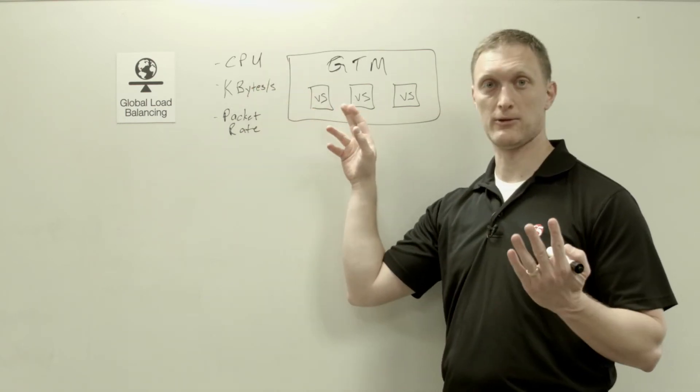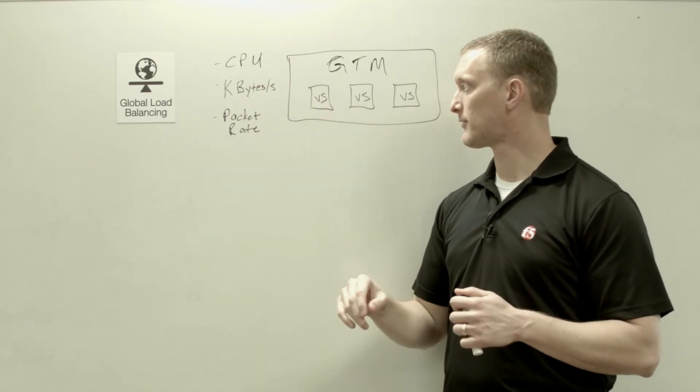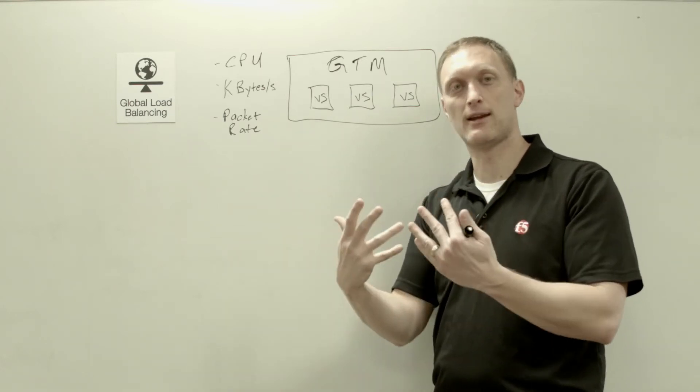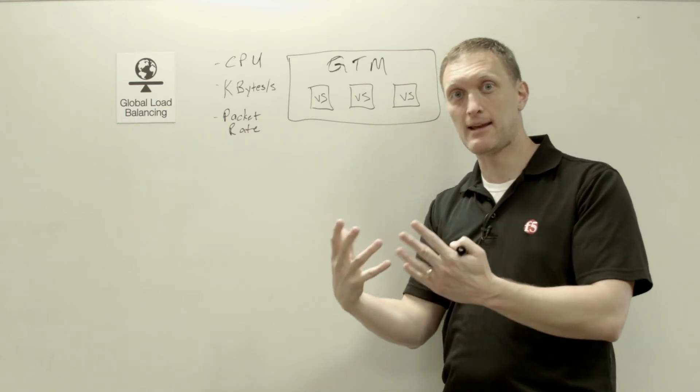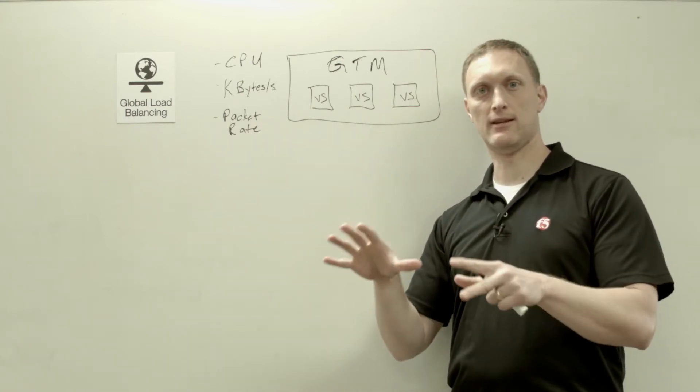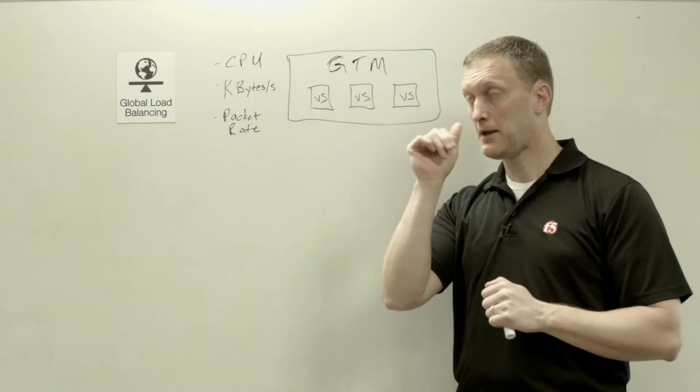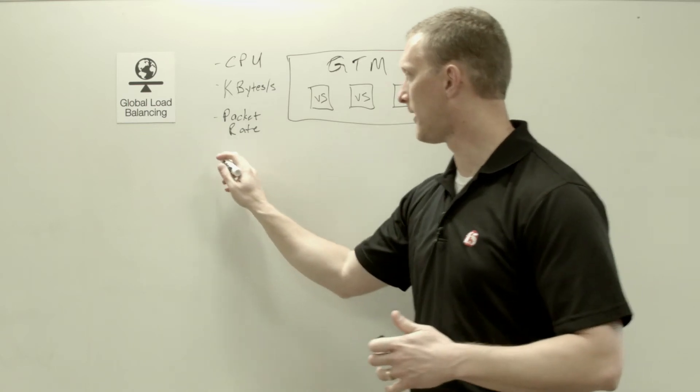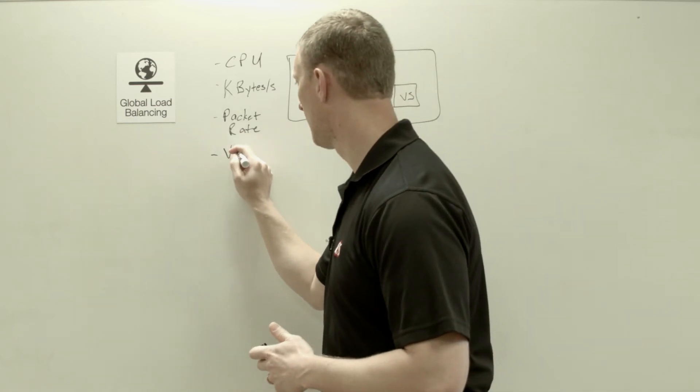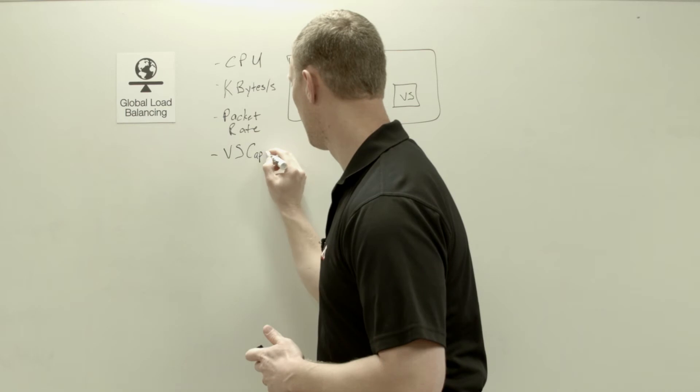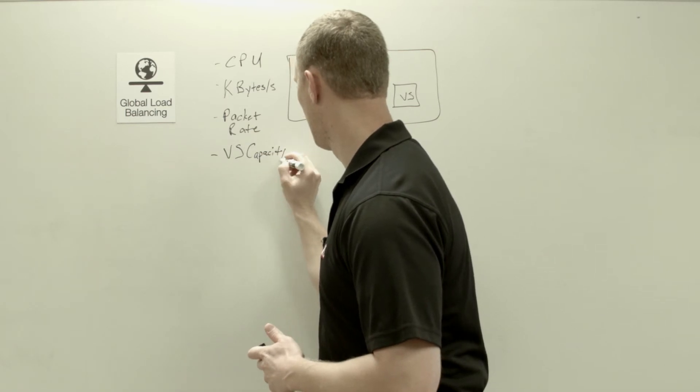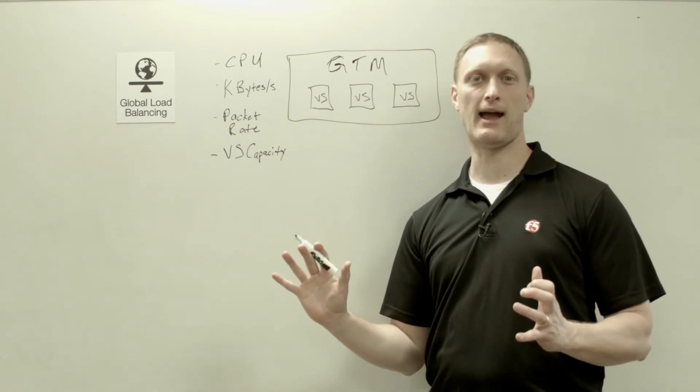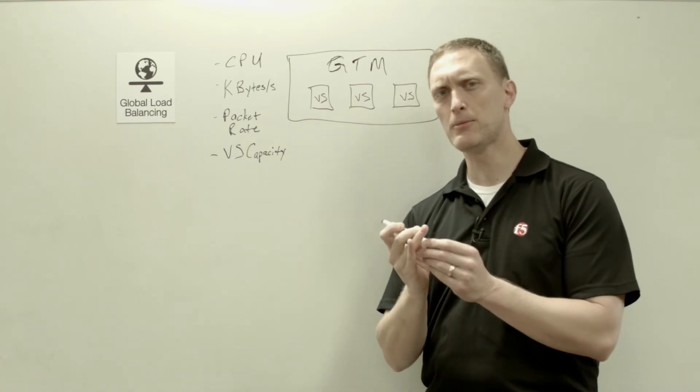So again, CPU is which one has the most CPU availability. Kilobytes per second, which one has the most kilobytes per second processing ability at that moment. And then packet rate, who is processing the least number of packets at that moment. So those three are three of the dynamic ones. And then the last one that we're going to talk about is the virtual server capacity. And I apologize for my penmanship, but hopefully you can read that. So virtual server capacity. So I want to spend a little bit more time on this one.